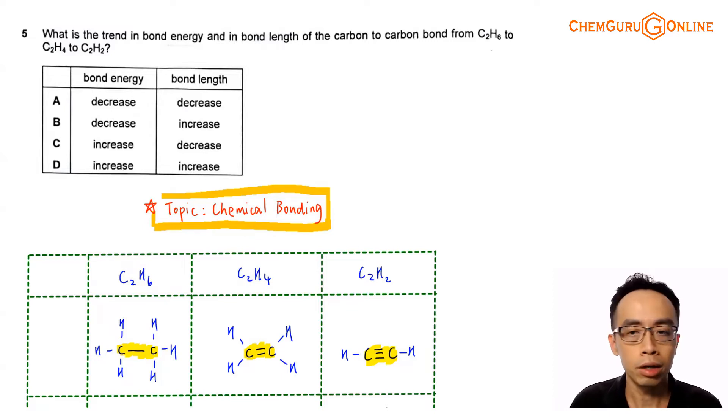Let's take a look at question 5. What is the trend in bond energy and in bond length of the carbon to carbon bond from C2H6 to C2H4 to C2H2? We have four trends involving bond energy and bond length, which we will be able to determine in a while.